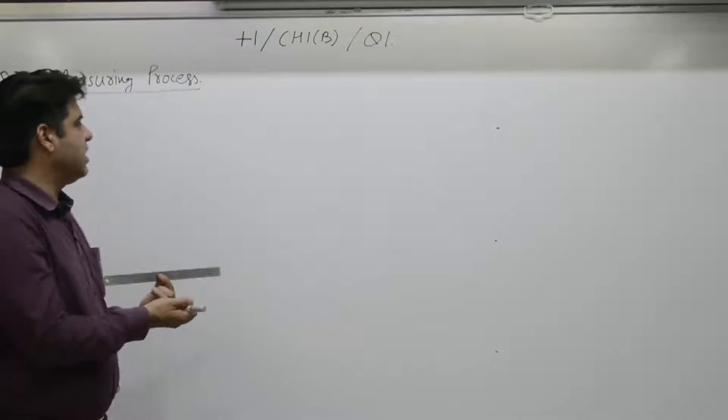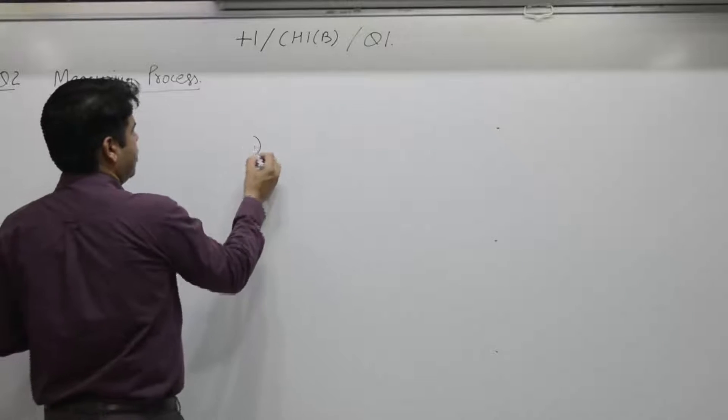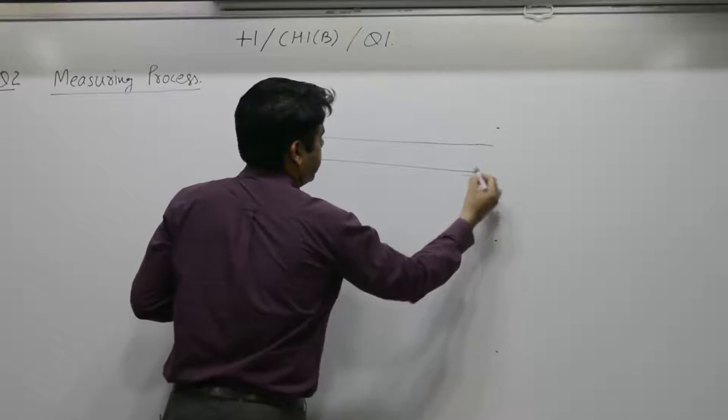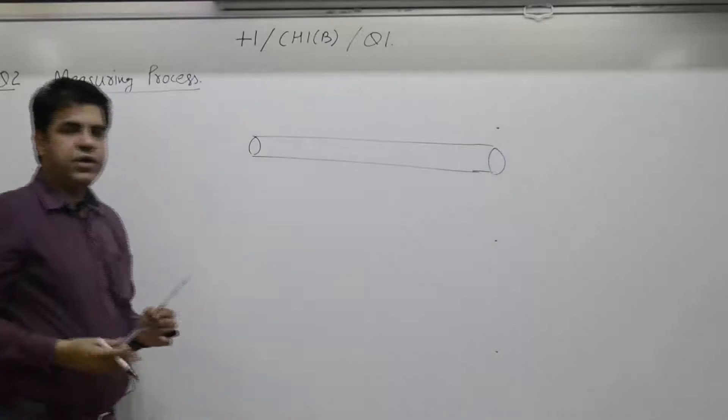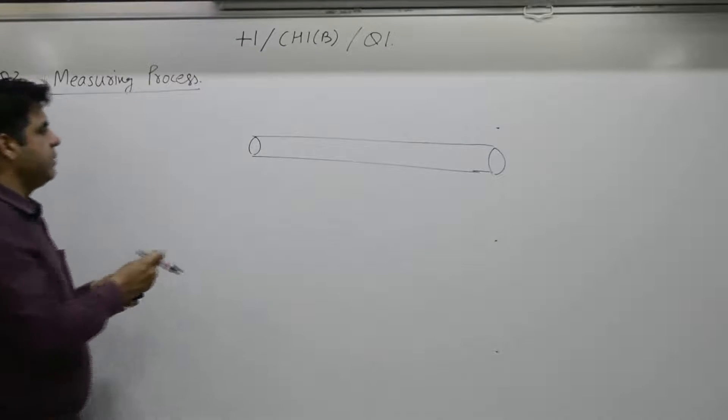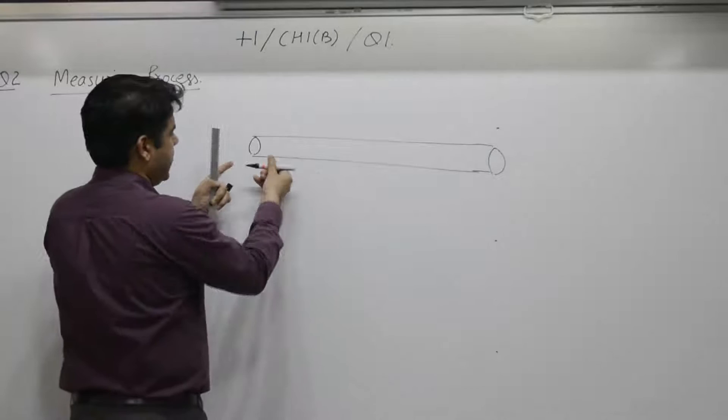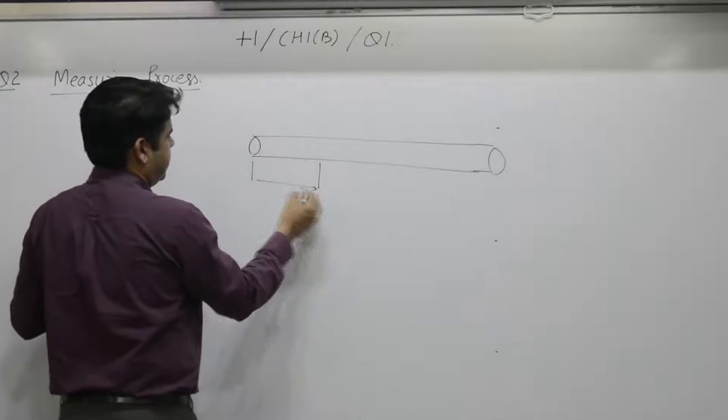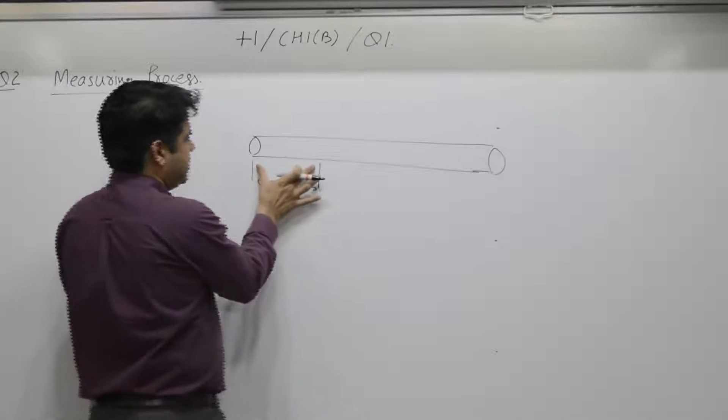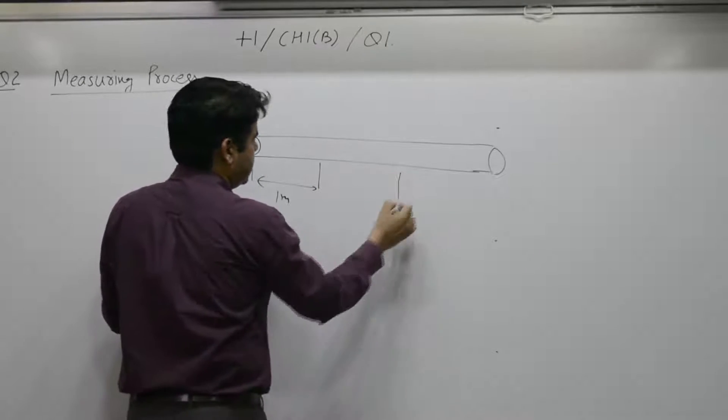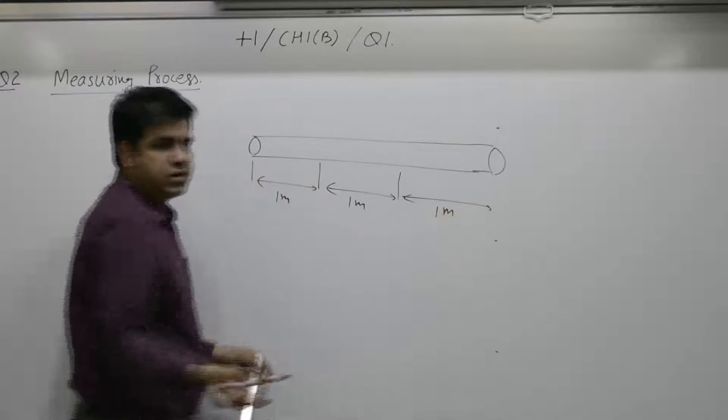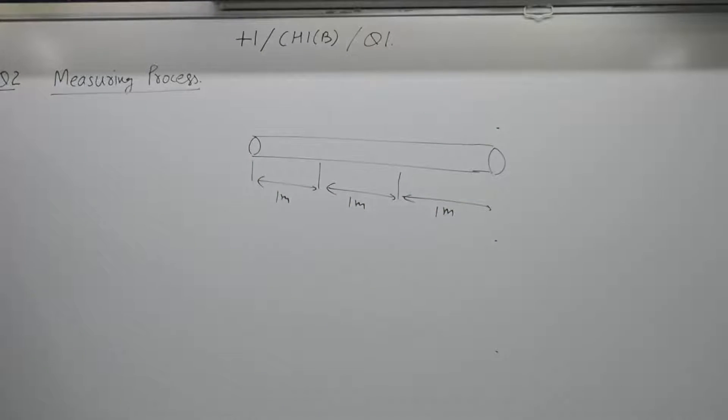As an example given in the book is, suppose you want to measure length of a rod. Take a unit, say 1 meter. Suppose 1 meter is available with you, place it here - 1 meter, 1 unit. Then place, shift it from this to this - 2 meters, then 3 meters. So the length of the rod is 3 meters.